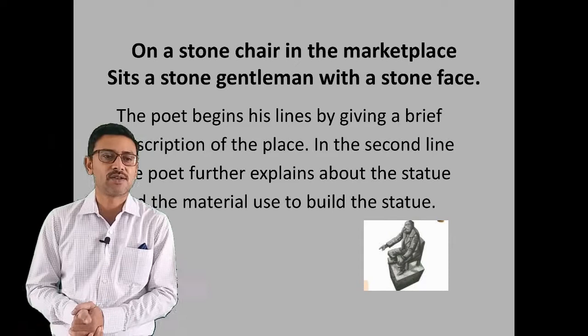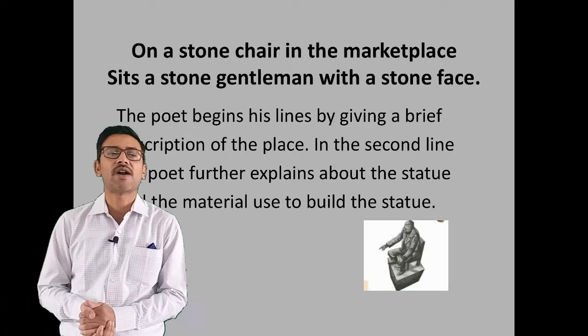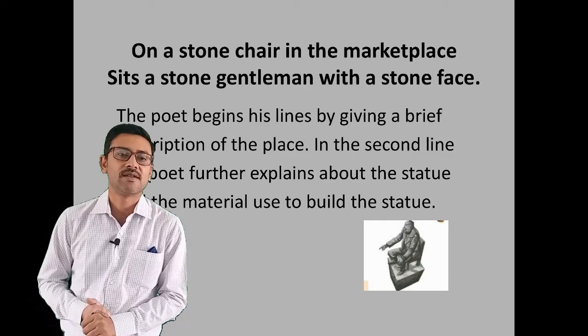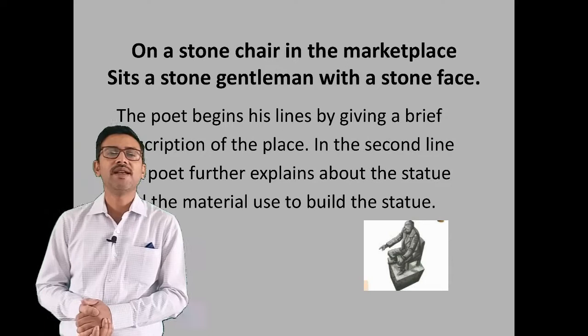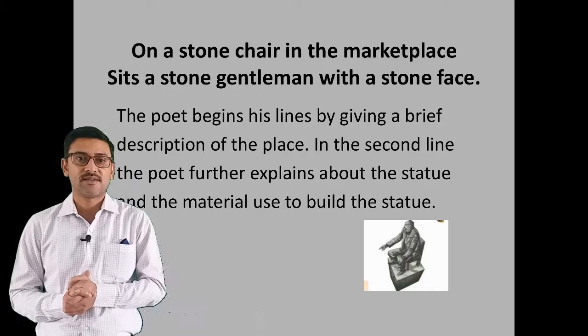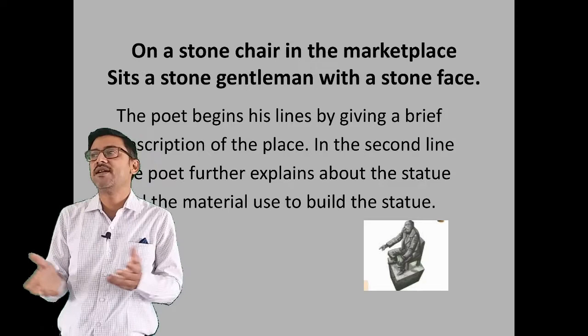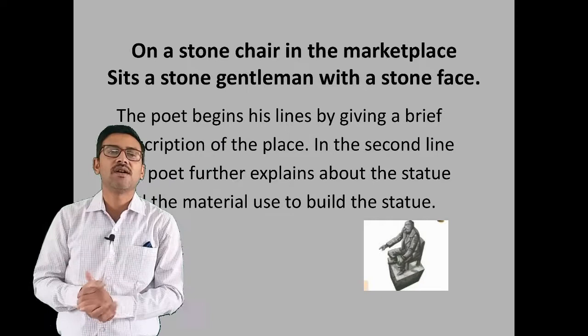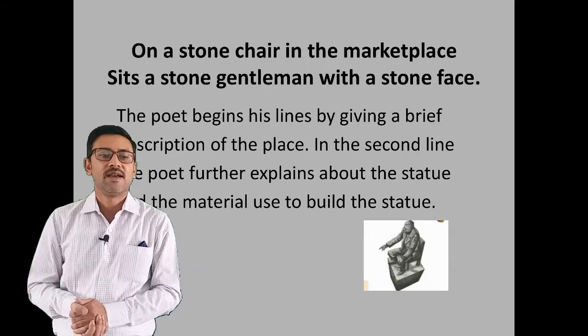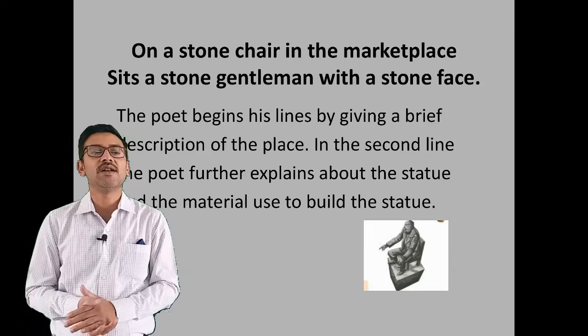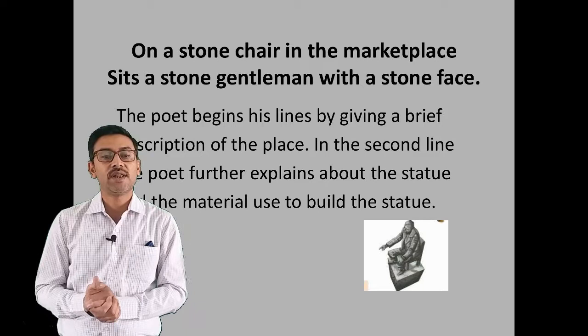The first two lines of the poem say: 'On a stone chair in the marketplace sits a stone gentleman with a stone face.' The poet begins by giving a brief description of the place. The word 'marketplace' instantly creates a picture in your mind. In the first line itself, the place is described with just one word, conveying the whole scenario.